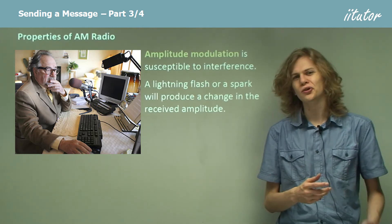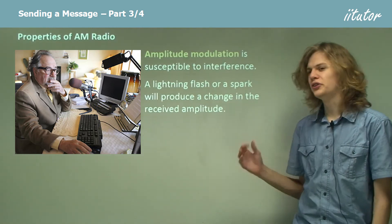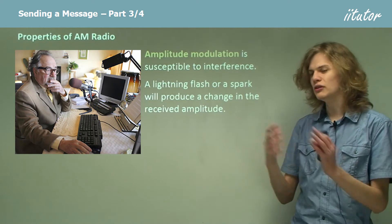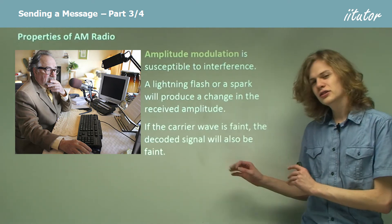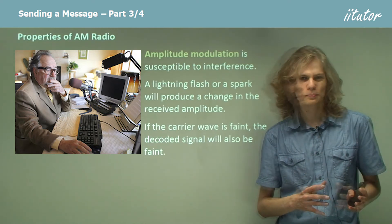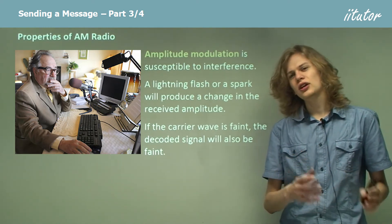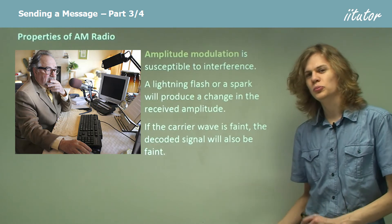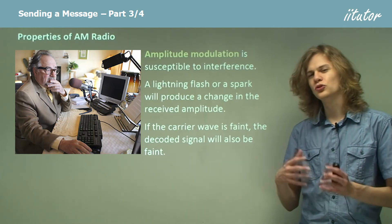When we decode it, we might get little bits of static or things like that when we receive the message. The other thing is that if the carrier wave is very faint, then the amplitude will not be very large. But once again, our receiver won't be able to tell that's because the distance the wave comes from is so far away.